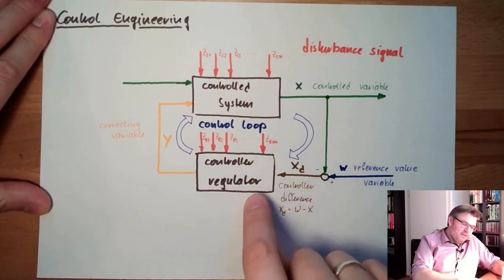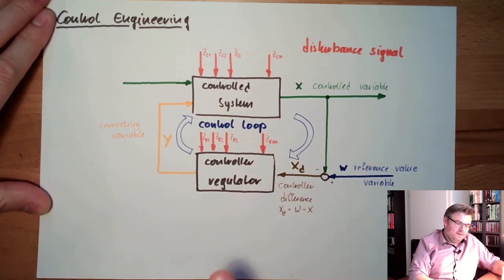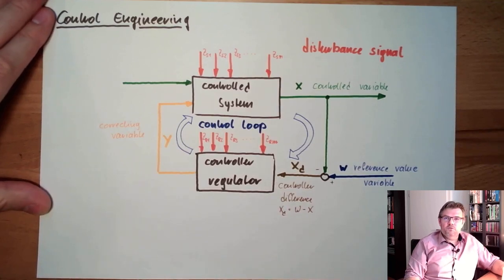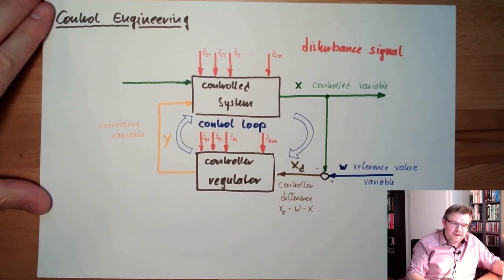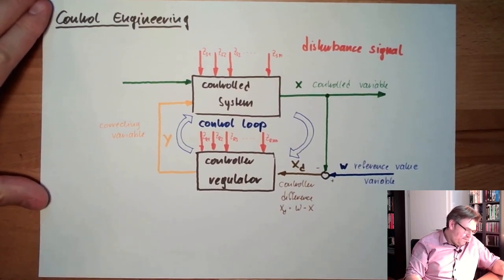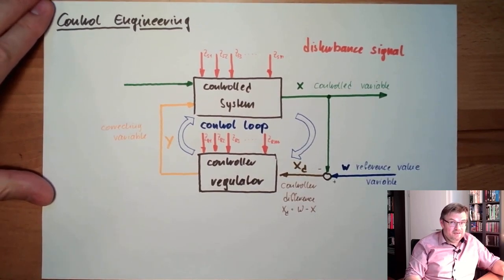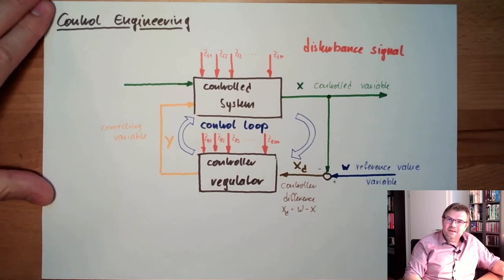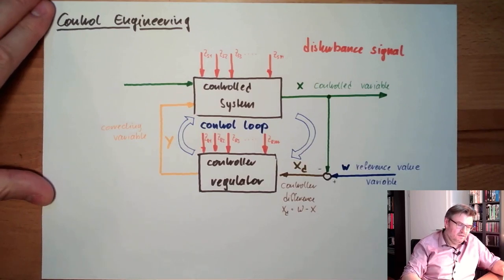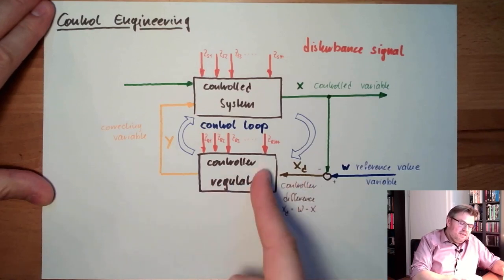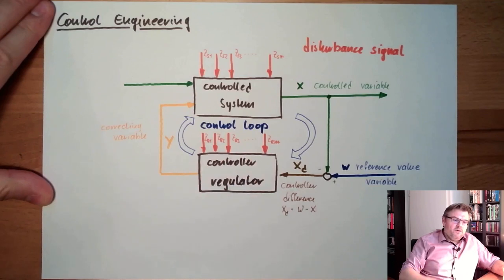The digital approach is very common right now. Analog controllers you can find most likely in a museum — it's really hard to find them in the field. The majority of controllers are digital, simply because it's much easier to calculate with numbers and it's more flexible.